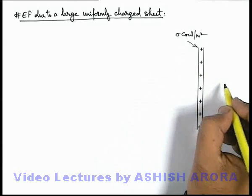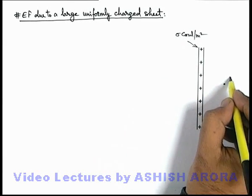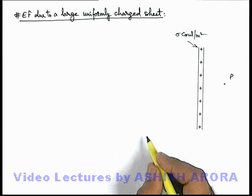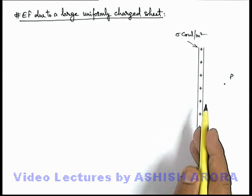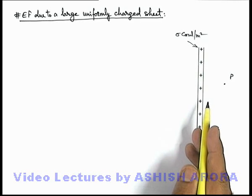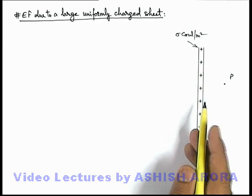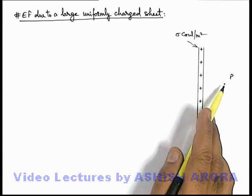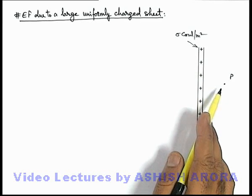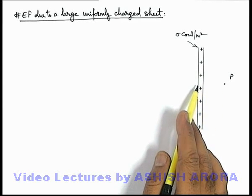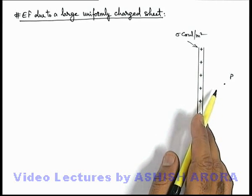And say due to the sheet, in front of it at a point P, we are required to find the electric field. For which certainly we need to consider a Gaussian surface if we wish to apply Gauss's Law. And the Gaussian surface must be considered in such a way that this point P must lie on the Gaussian surface, and at every point of Gaussian surface either electric field would be parallel or perpendicular to the surface.